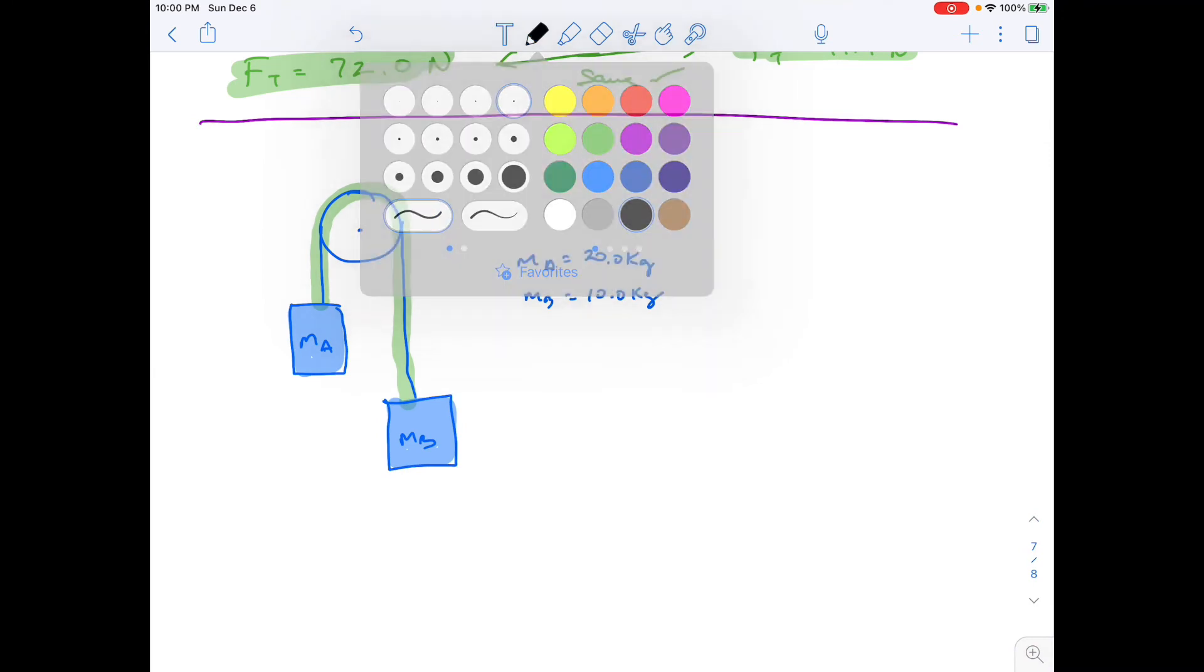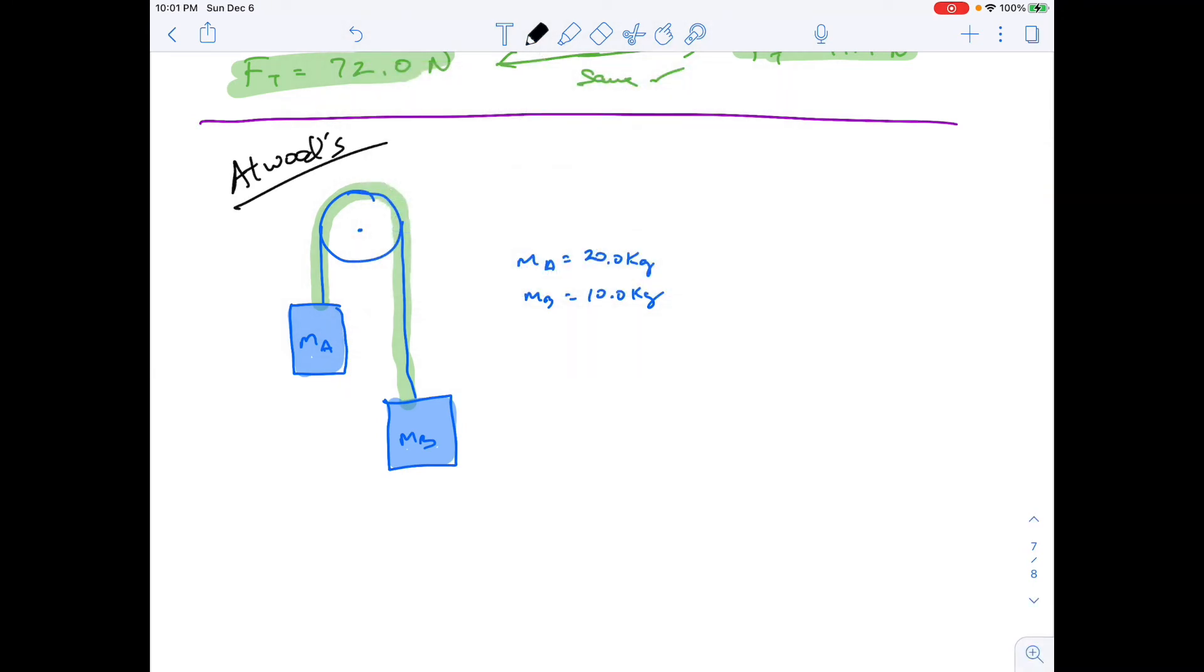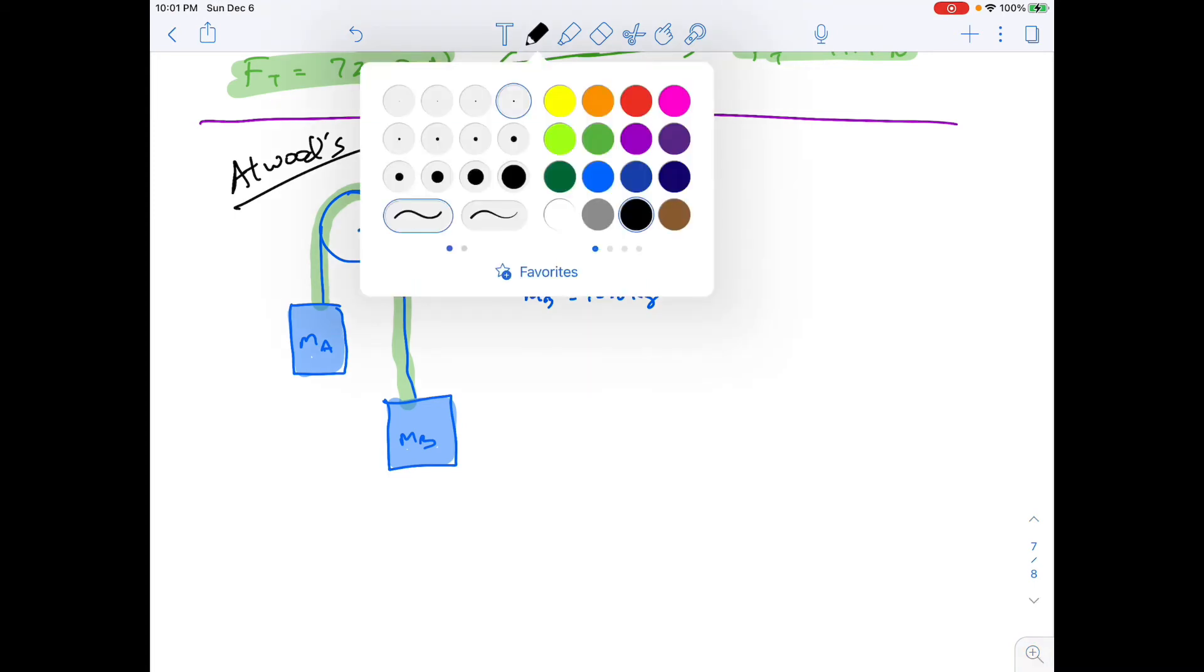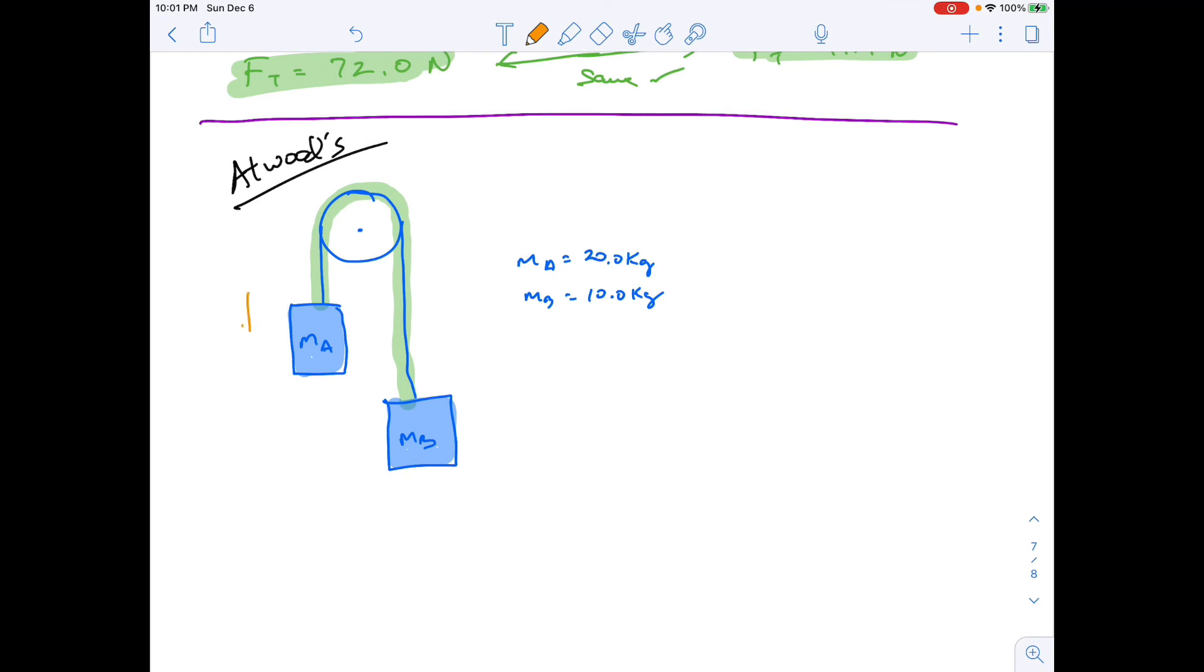And so the way I originally set it up was MA was heavier. So we're going to still say that MA equals 20.0 kilograms, and MB equals 10.0 kilograms. We're going to keep that going. And that means I should write that. Call it Atwood's machine.